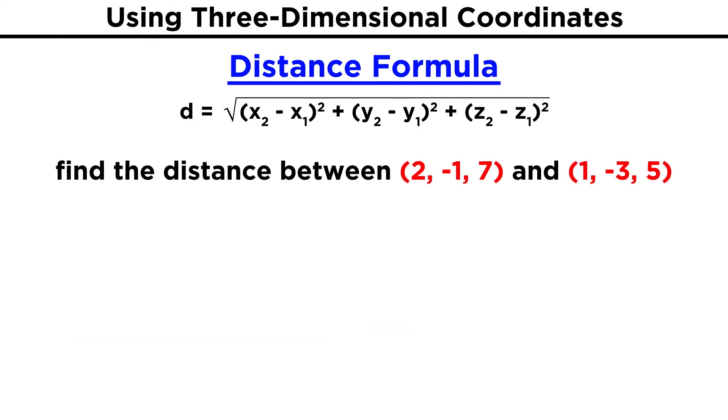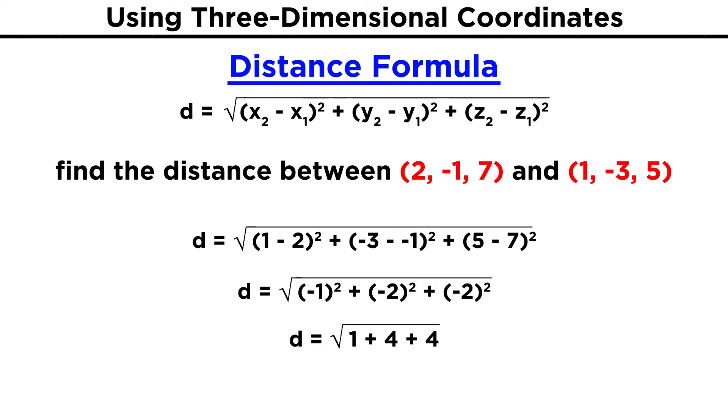Let's apply the formula and get the distance between the point two, negative one, seven, and the point one, negative three, five. All we have to do is plug these numbers into the formula, evaluate each difference, square the resulting values, add those numbers together, and take the square root. So three will be our answer.